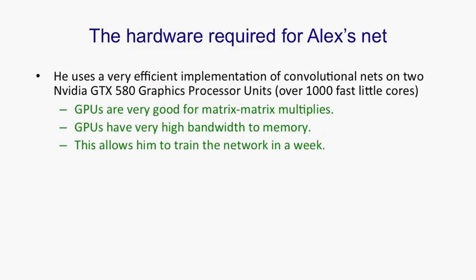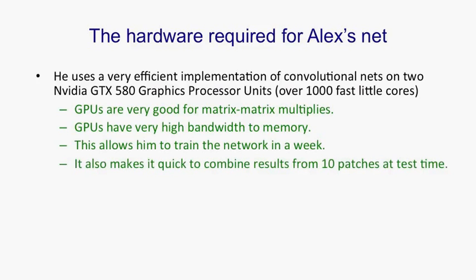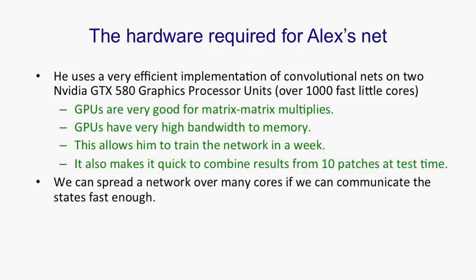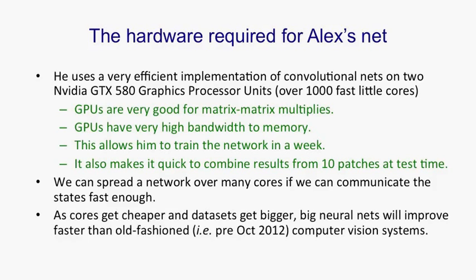Using all that hardware, he could train his final network in a week and combine results from 10 patches at test time very quickly — at just about frame rate. In future, we'll be able to spread this kind of network over a large number of cores. Google has already simulated networks with 1.7 billion connections, and as cores get cheaper and datasets get bigger, these big deep neural nets are going to improve much faster than old-fashioned computer vision systems because they don't involve much hand engineering and can make very good use of huge datasets and huge amounts of computation.